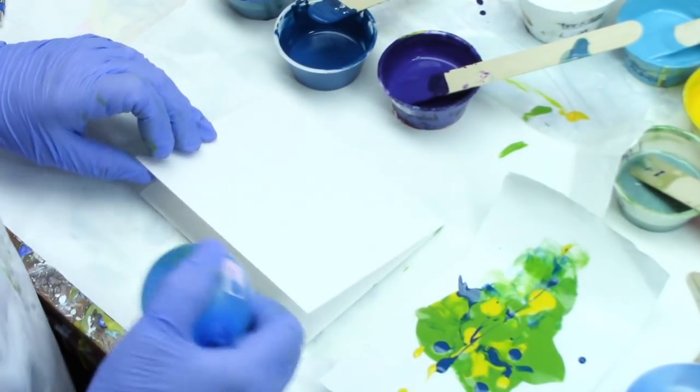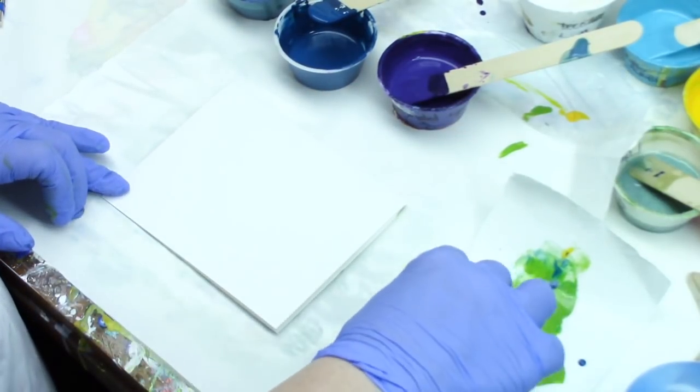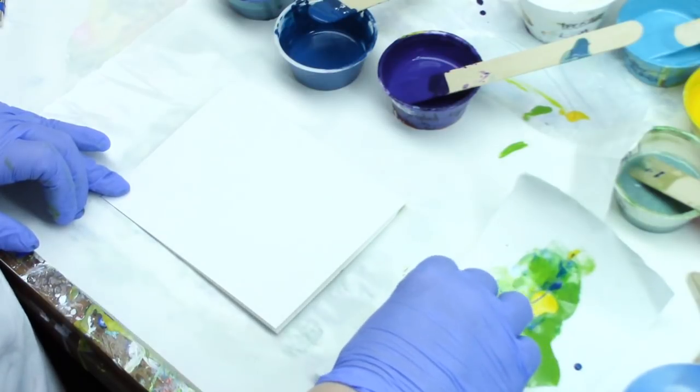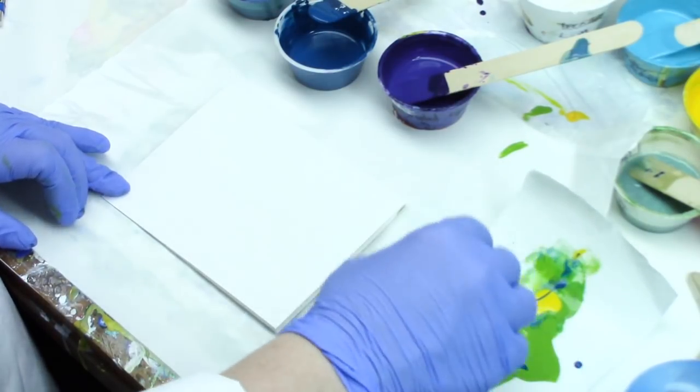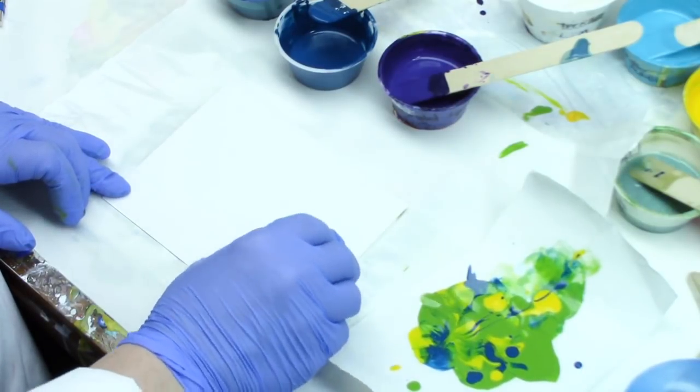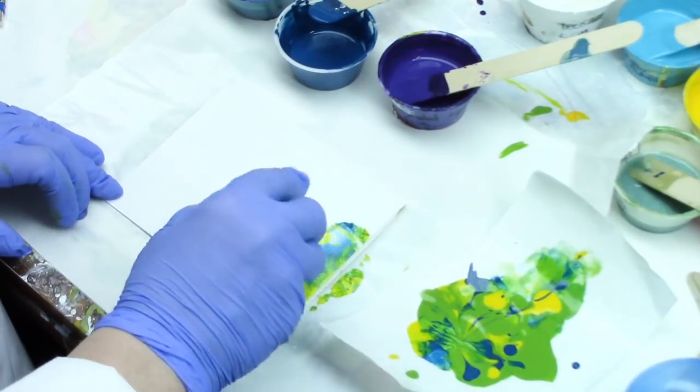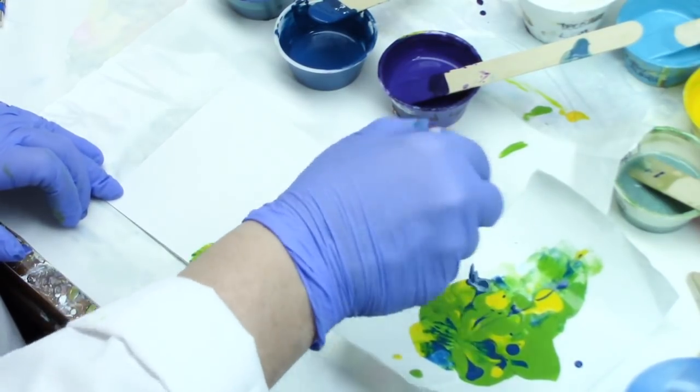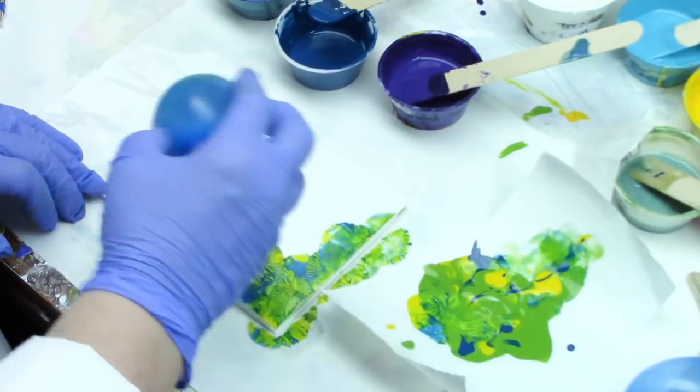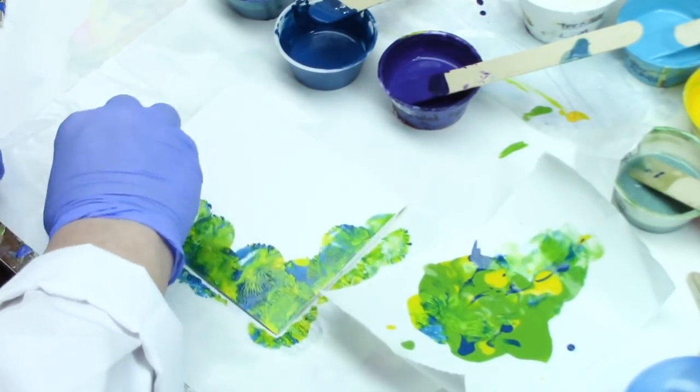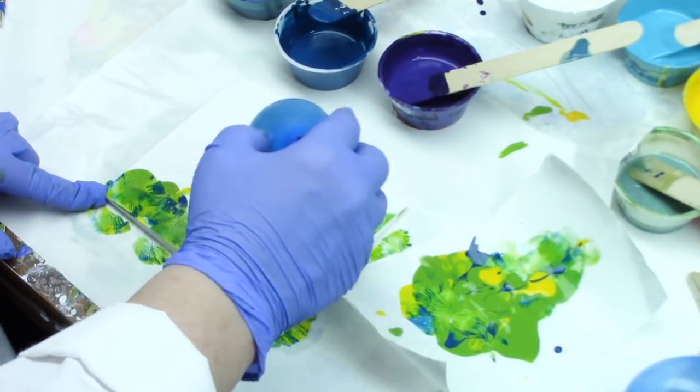I'm using 110-pound Neenah cardstock to make a gift card that will be painted with these flowers. All I'm doing is stamping down into the paint and then onto the card. It's random—you just fill up your card around the edges and up the sides.